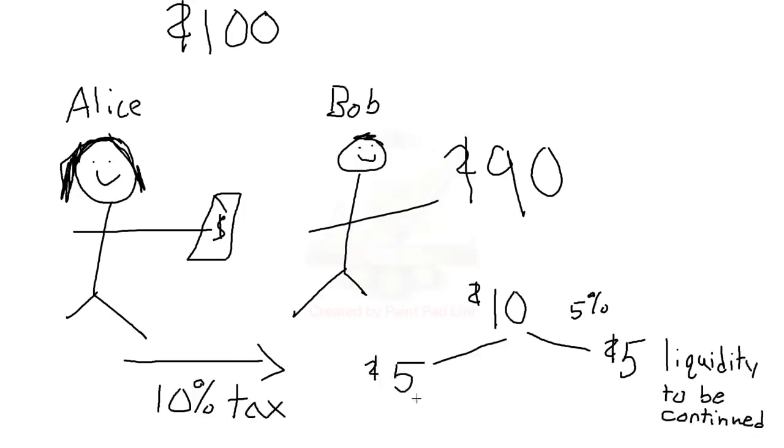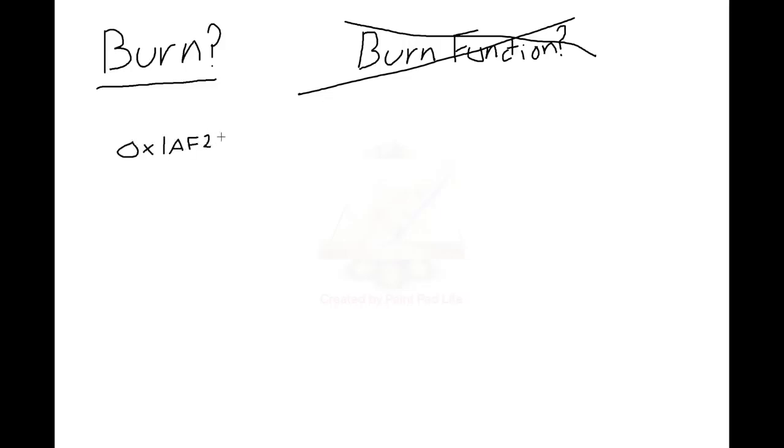The other $5, the other 5% of the transaction is split up amongst all of the holders. We refer to this split up as the reflections, and that's what we'll be diving deeper into. But wait, what about the burn? Isn't there some burn function that burns the coins? No. There is no burn function that does not exist in the code.